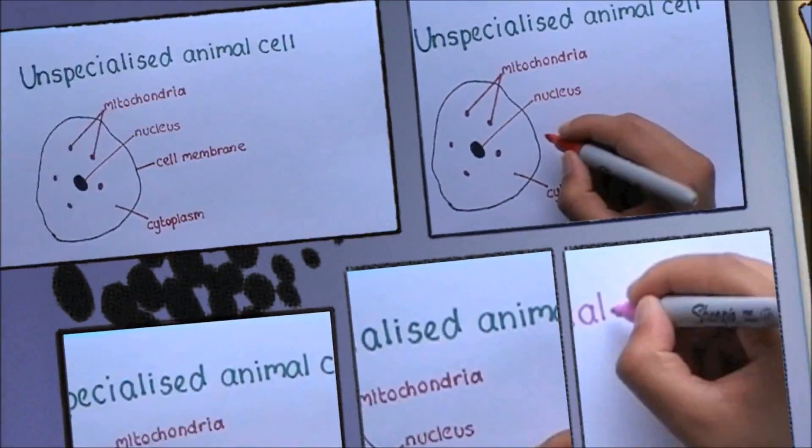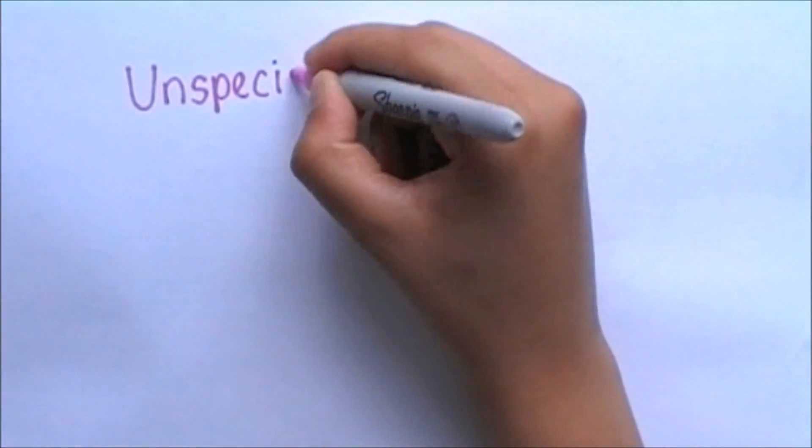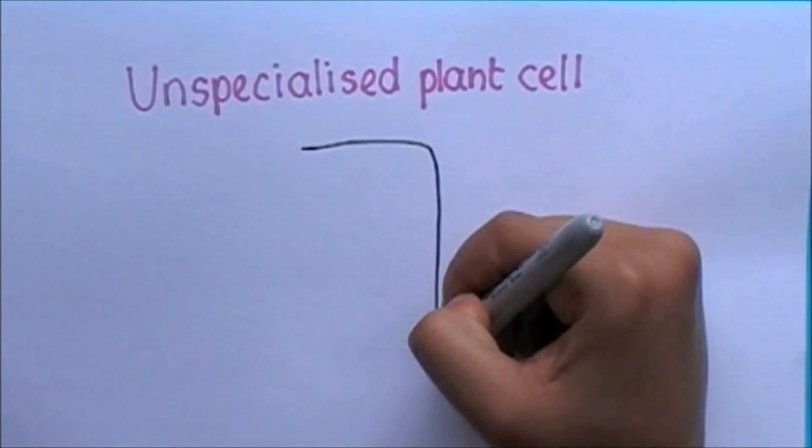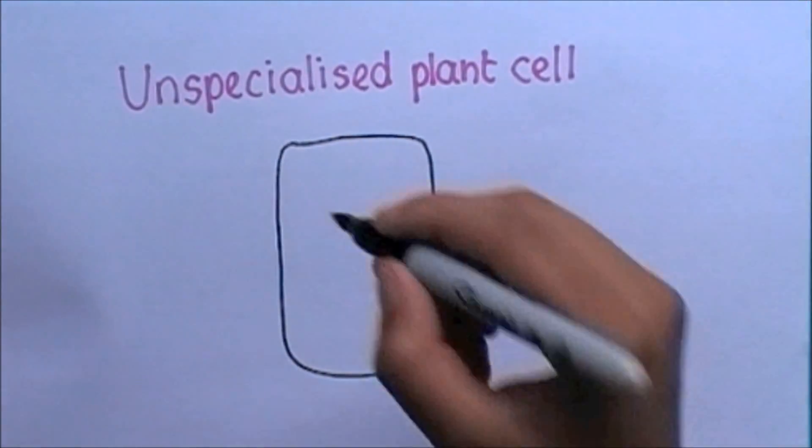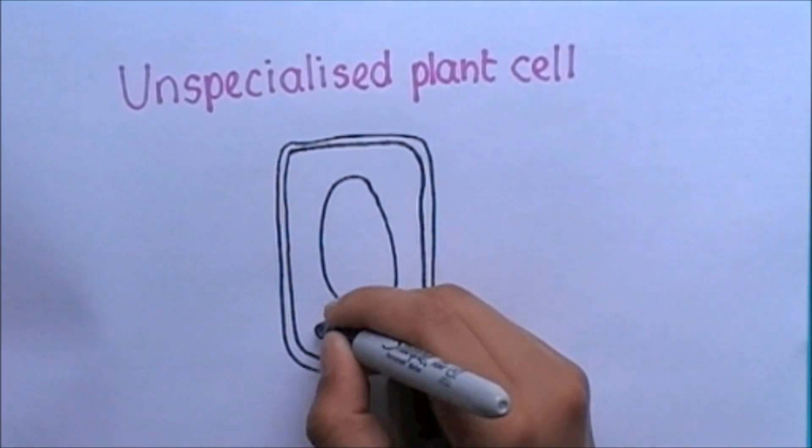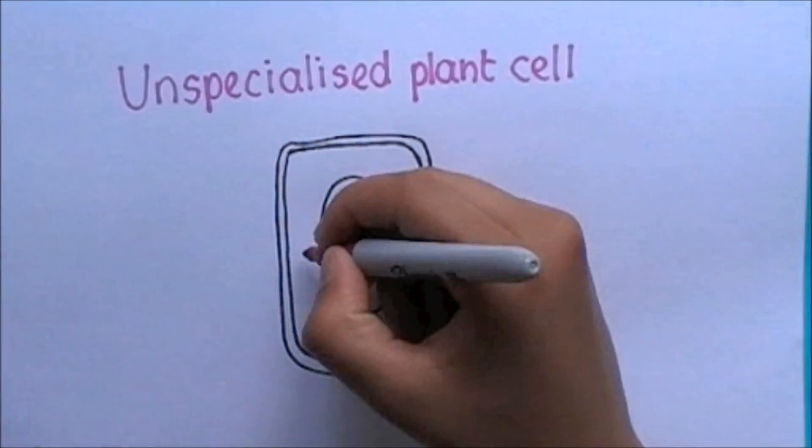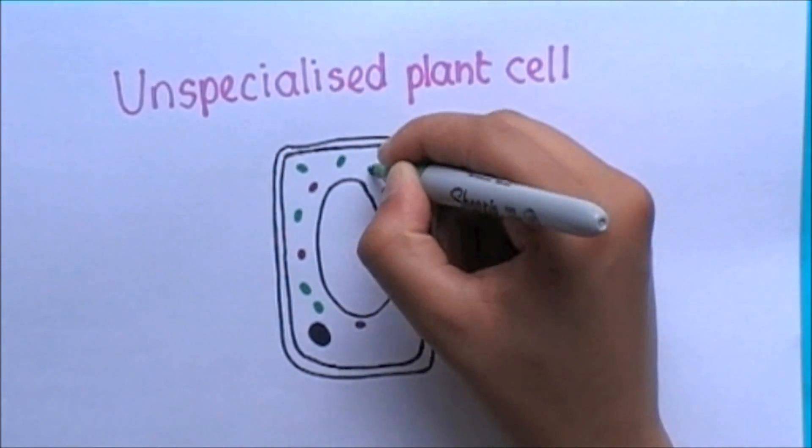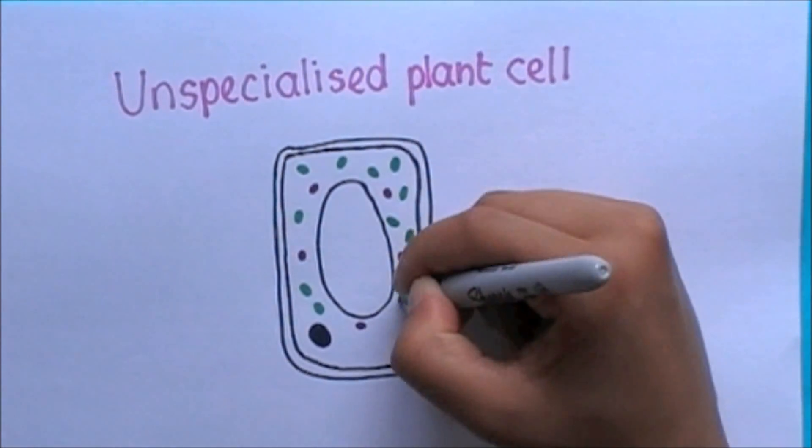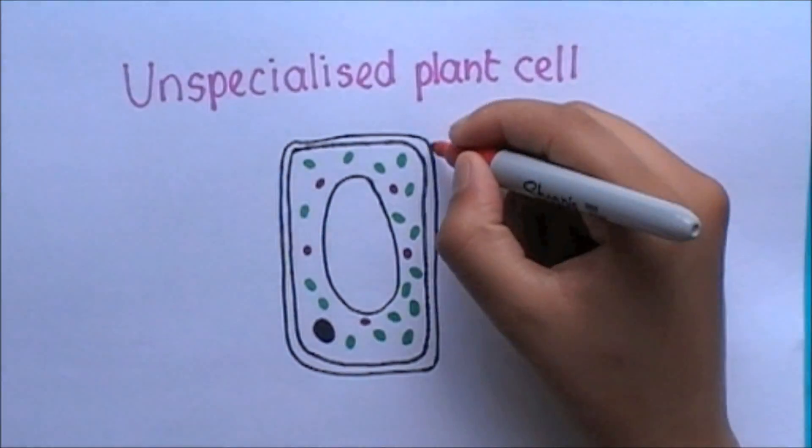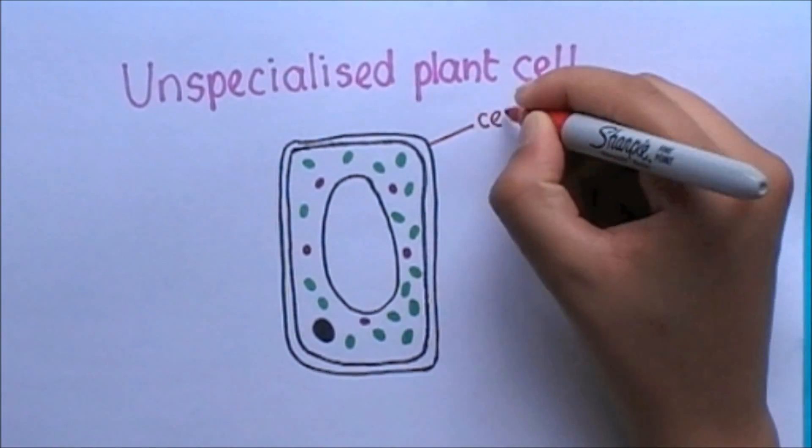Now, let's take a look at an unspecialized plant cell to see how that compares to the animal one we just looked at. As you can immediately tell, there are some extra structures which we did not see in the previous cell, beginning with this cell wall.